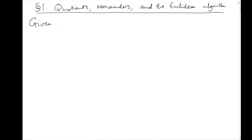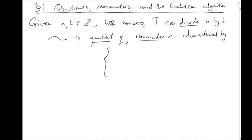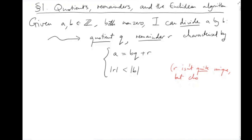If I'm given any two integers A and B, both non-zero, I can divide A by B. This procedure will give me a quotient Q and a remainder R, which can be characterised as follows: A is BQ plus R, where R is the integer such that |R| is less than |B|. R isn't quite unique, but this is good enough for our purposes.